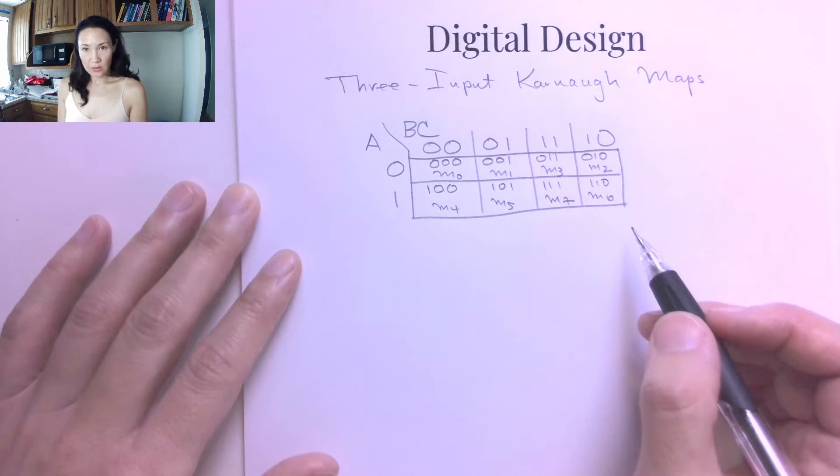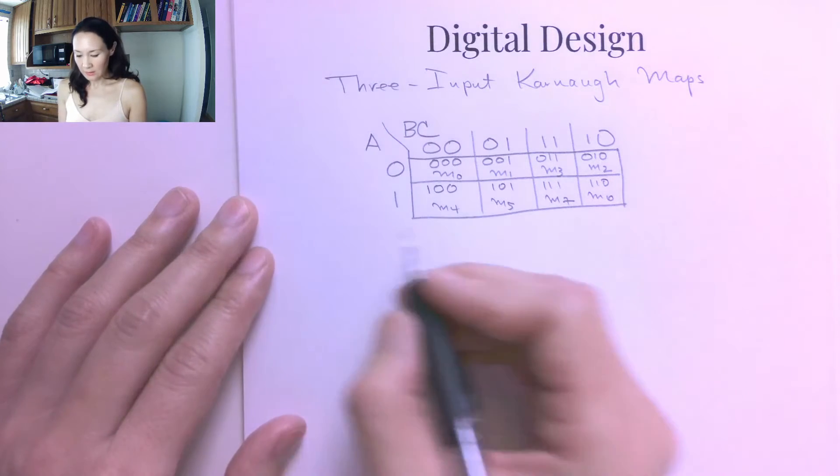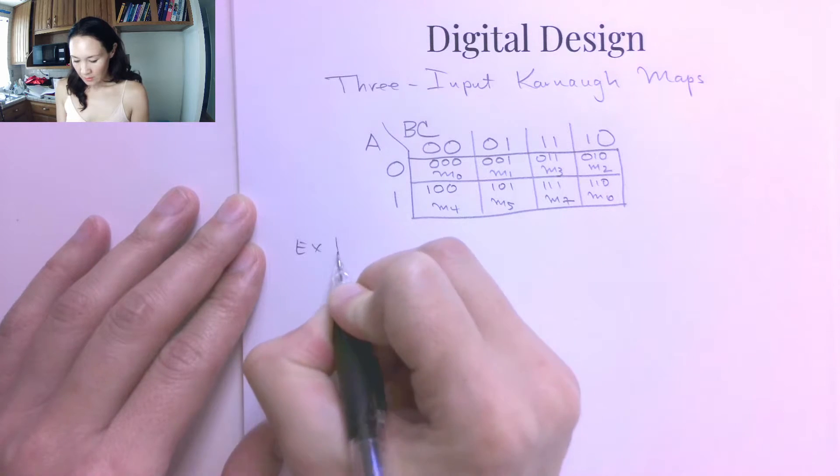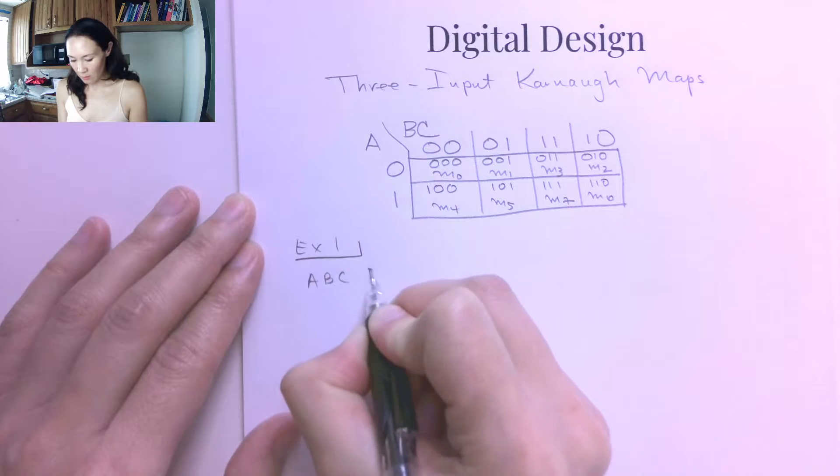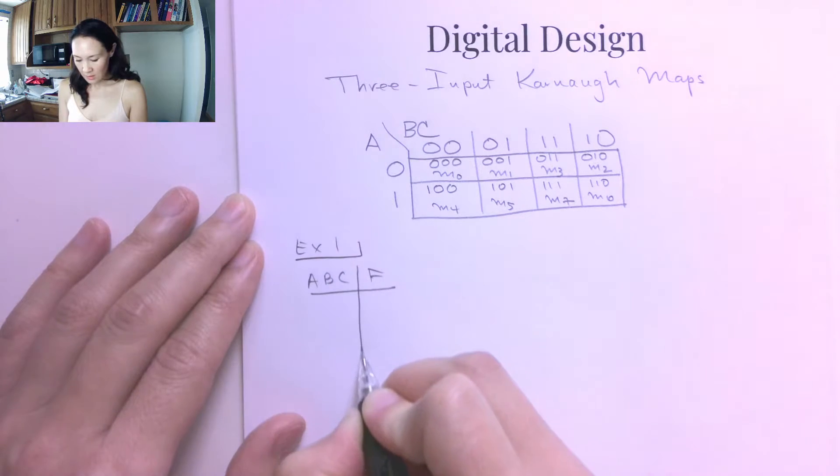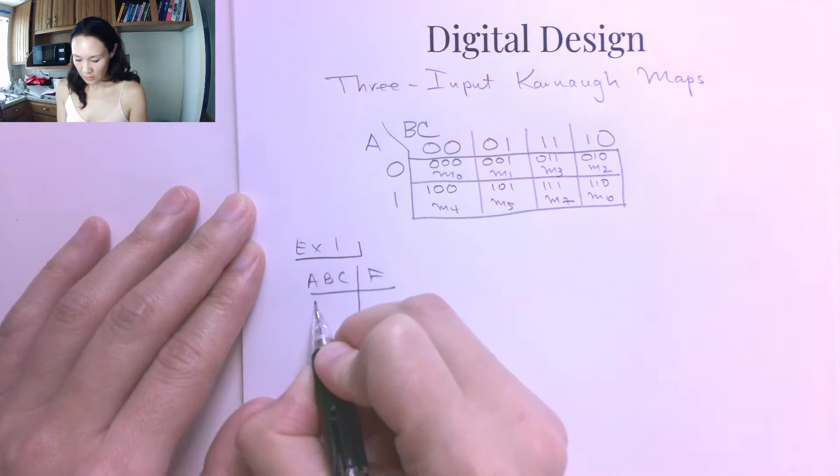Alright, so now that you see how to construct the general K-map, let's do an example. So suppose we are asked to make a three input Karnaugh map for a function and we have the truth table of the function.